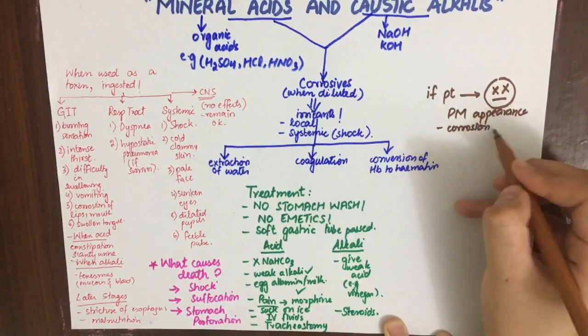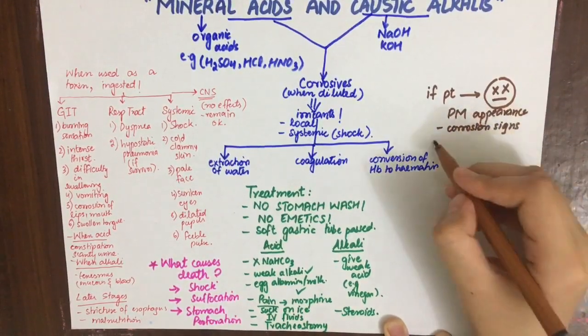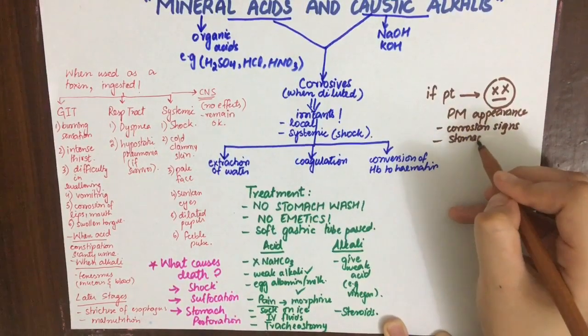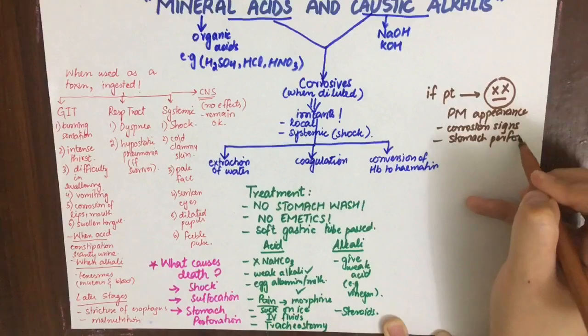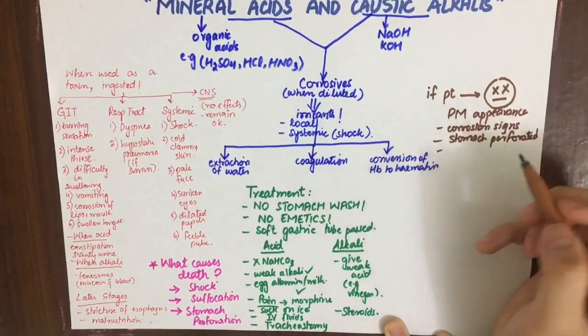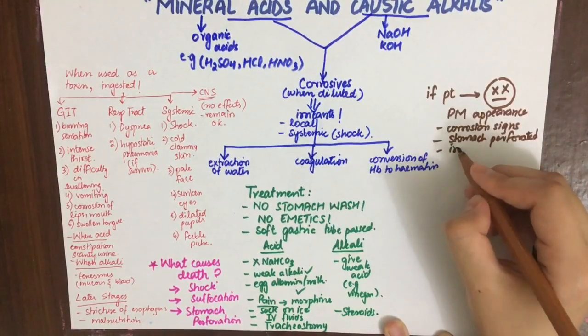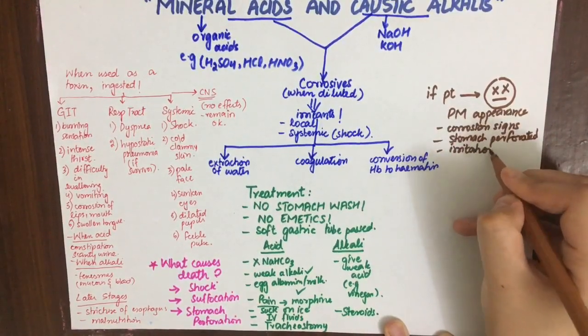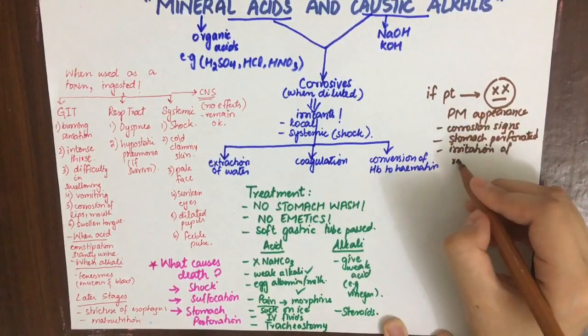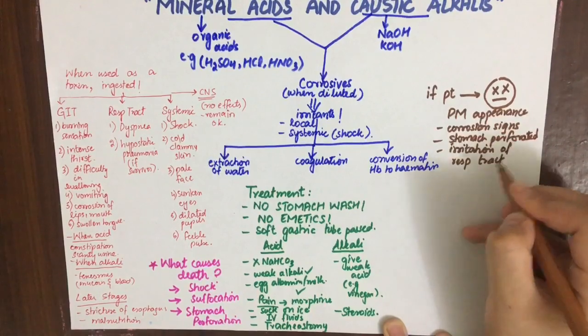If the patient dies, post-mortem appearance will include corrosive signs of burns, perforation of the stomach, and in case of volatile poisons, irritation of the respiratory tract.